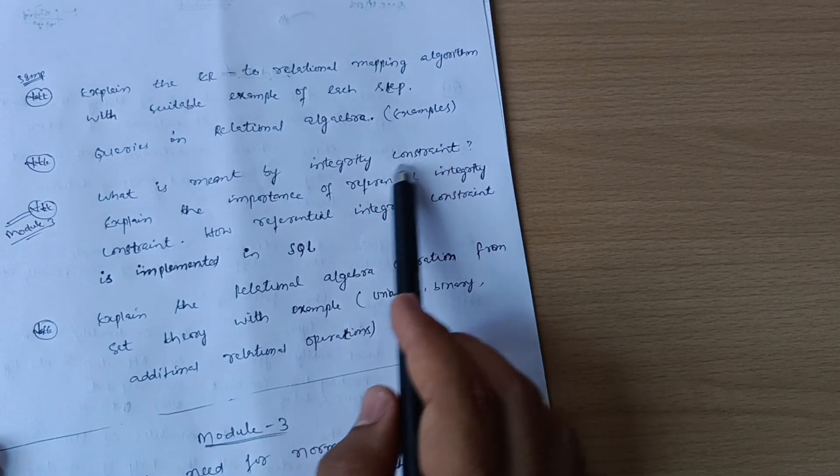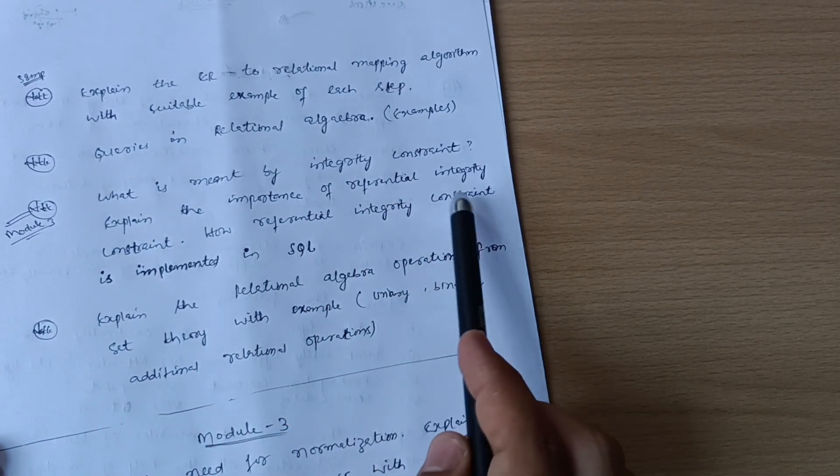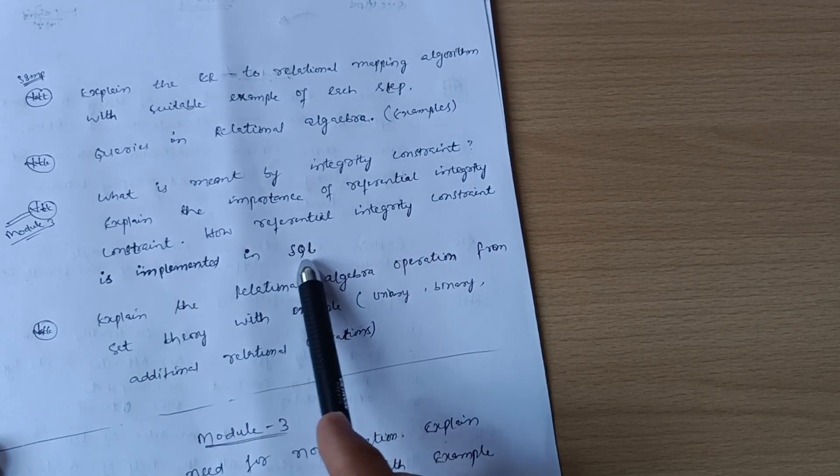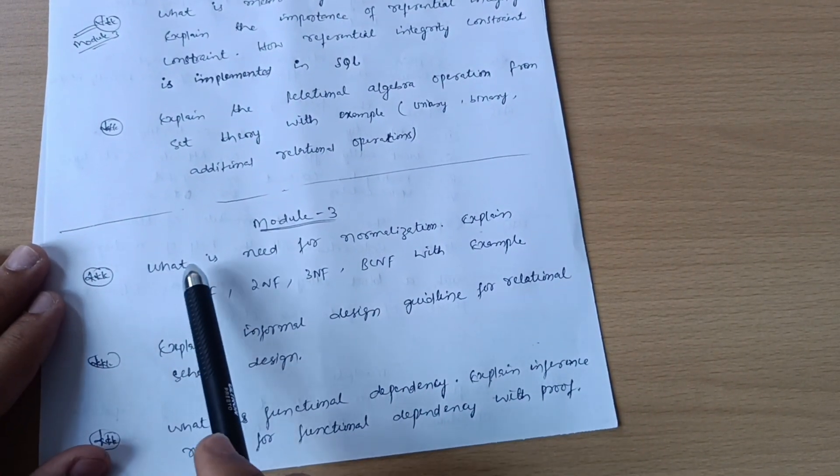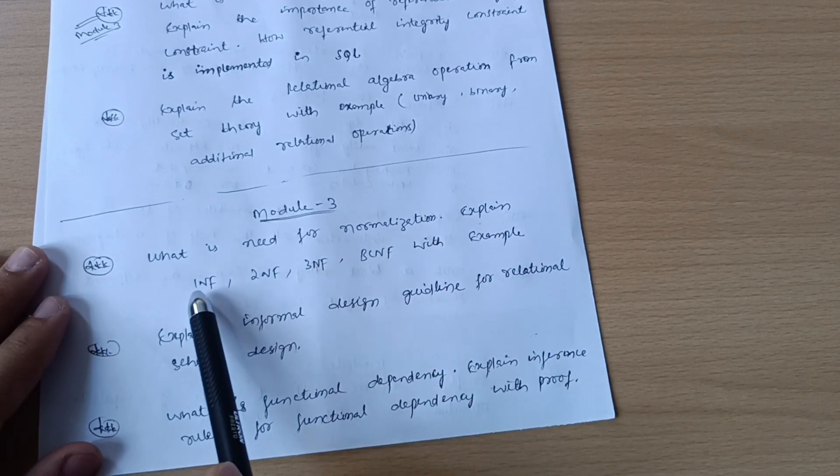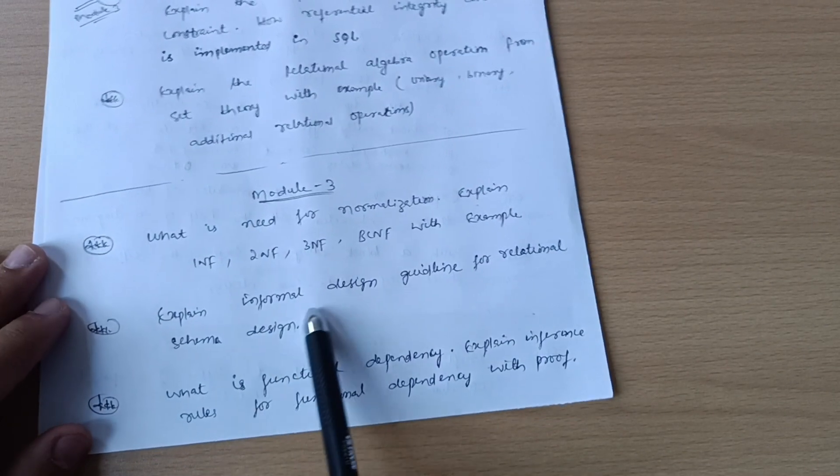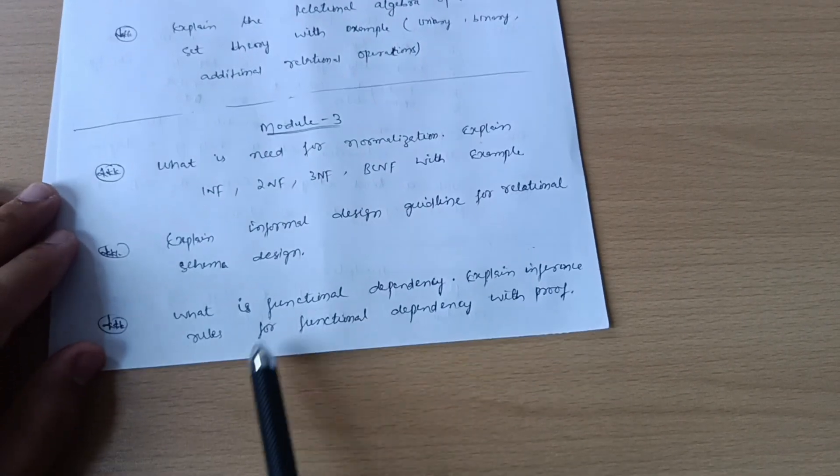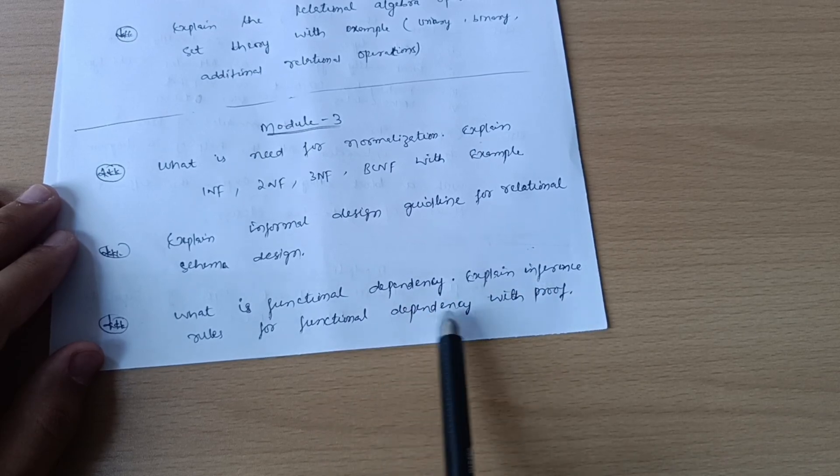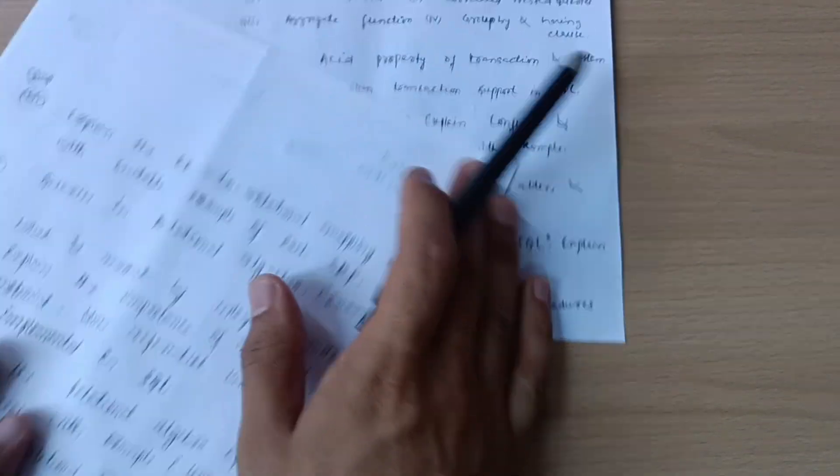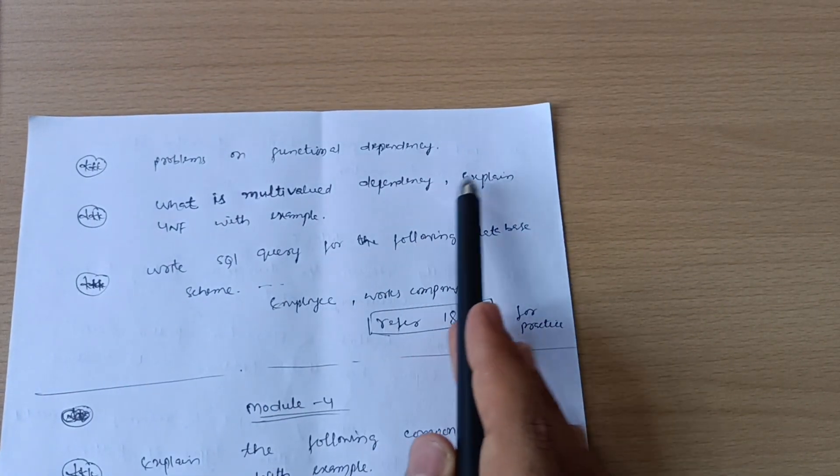Model 3 questions: What is meant by integrity constraint? Explain the importance of referential integrity constraint and how it is implemented in SQL. What is the need for normalization? Explain 1NF, 2NF, 3NF and BCNF with examples. Explain informal design guidelines for relational schema design. What is functional dependency? Explain inference rules for functional dependency.